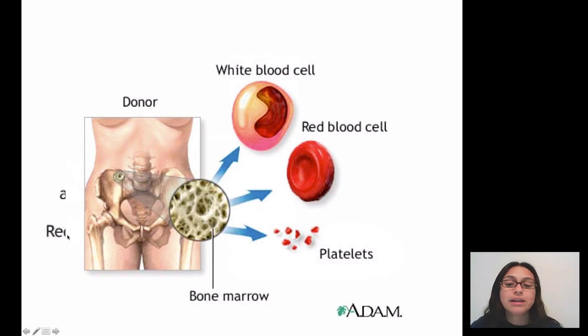All right, red blood cells are made in the bone marrow. So white blood cells are made from cells within the bone marrow. The red blood cells are made, same thing with platelets.